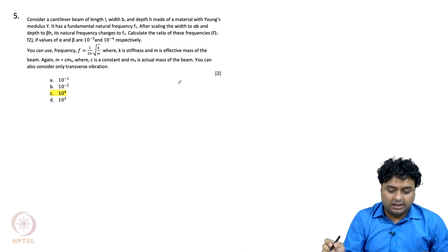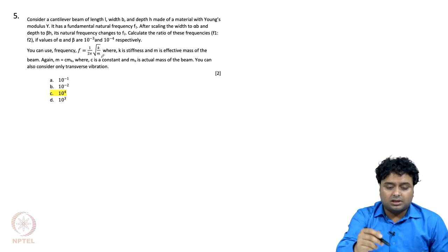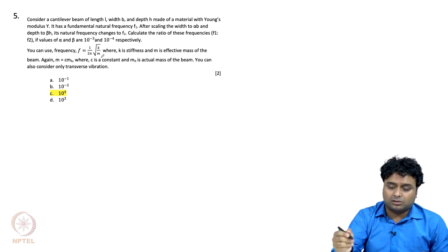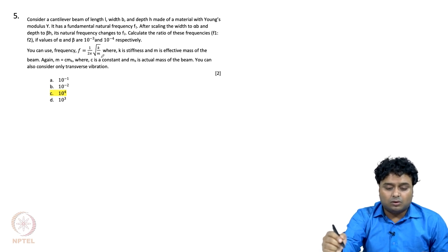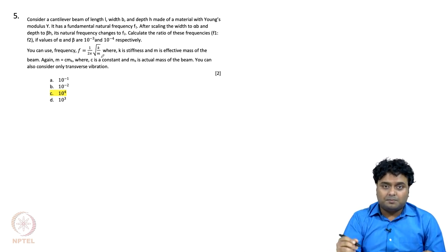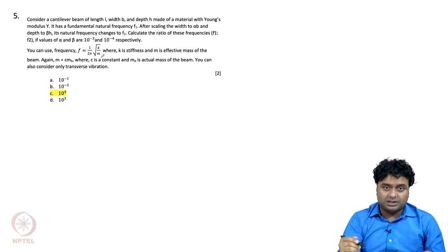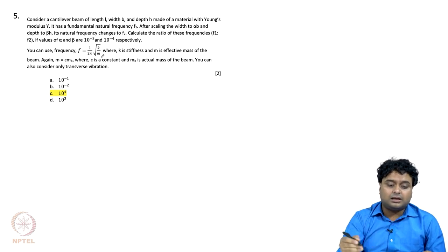This question is again related to scaling and simple mathematics. The frequency formula is f equals 1/(2π) times square root of k/m, which is the natural frequency of a spring-mass system. Here, the effective mass and actual mass are not the same because stiffness contributes to inertia, but they are related by a constant, so it does not matter. We will consider only transverse vibration, where the cantilever is fixed on one side and a transverse force is applied on the other.